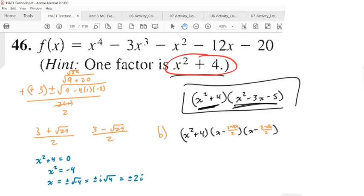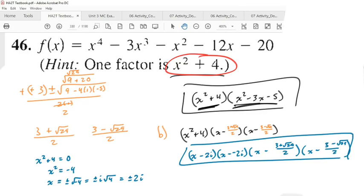X minus positive two I, X minus negative two I. And then we have this other stuff. Oh man, I have to write all that too. X minus three plus square root of 29 over two. X minus three minus square root of 29 over two. Wow. That is the answer to C. Ew.